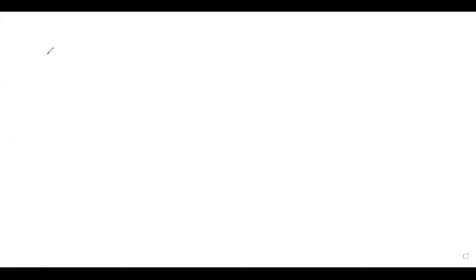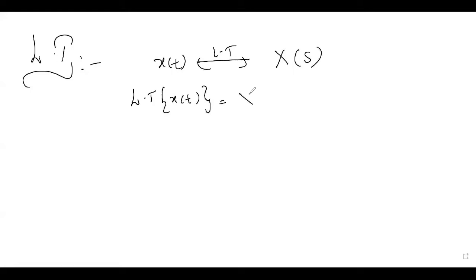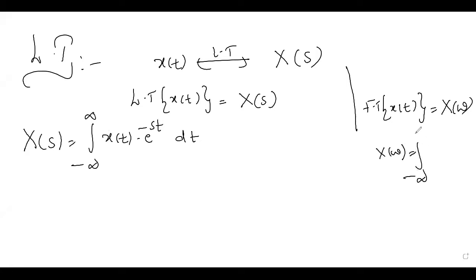Coming to Laplace Transform: if X(t) is our time domain signal, its Laplace Transform is represented as X(S) — the S-domain. Like in Fourier Transform, where we represent X(t) as capital X(ω), similarly for Laplace Transform there is a formula to find it. X(S) equals the integral from minus infinity to infinity of X(t) multiplied with e^(−St) dt. Compare this with the Fourier Transform formula: X(ω) equals the integral from minus infinity to infinity of X(t) multiplied with e^(−jωt) dt.